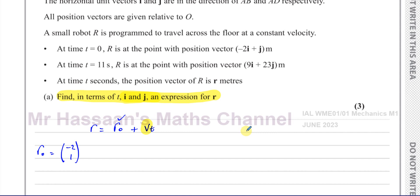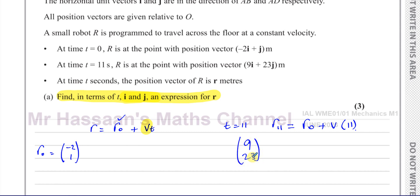We can find its velocity because we know the time it's traveled — 11 seconds — and it has gone from the initial vector to the final vector. So we can apply the formula: when time equals 11, r₁₁ equals r₀ plus v times 11. We know its position when t equals 11, they've told us, so that's 9i plus 23j, and that equals r₀ which is minus 2i plus j, plus v times 11.